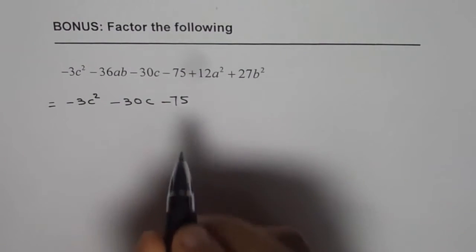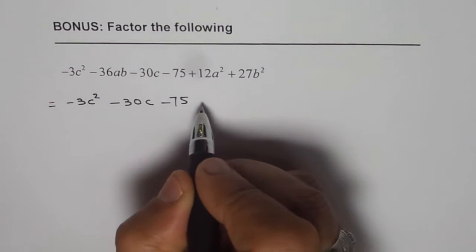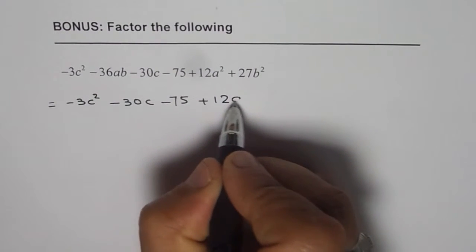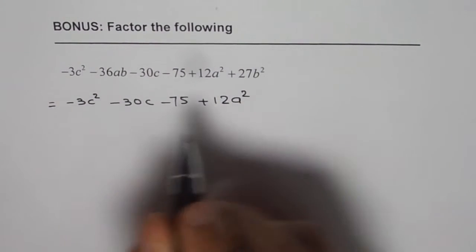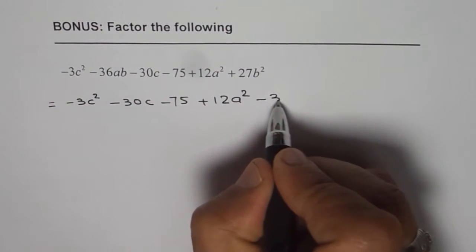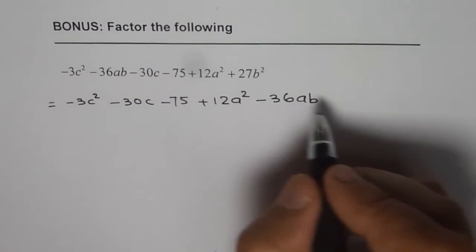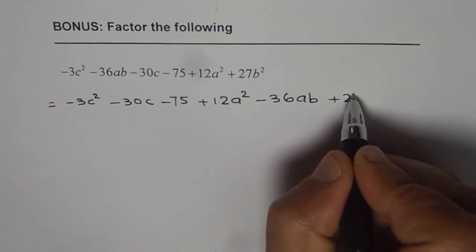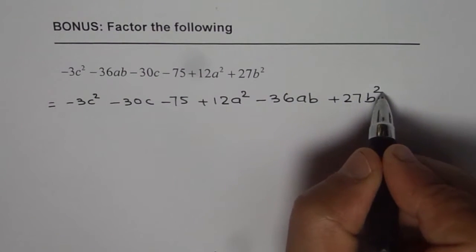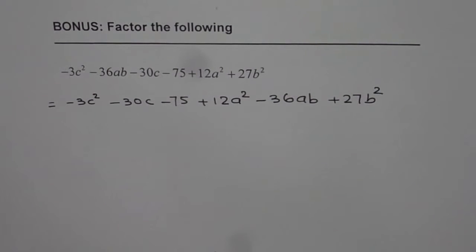Now in a's and b's let's start with the a square. So we have plus 12a square then the ab term minus 36ab and then we have plus 27b square. Now that simplifies the problem a bit.